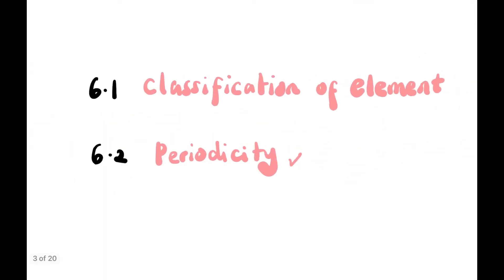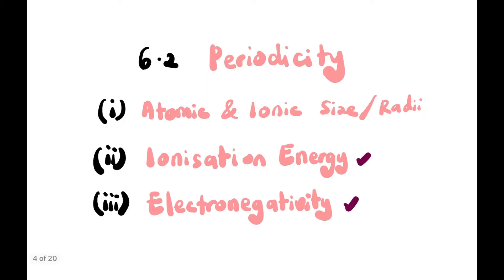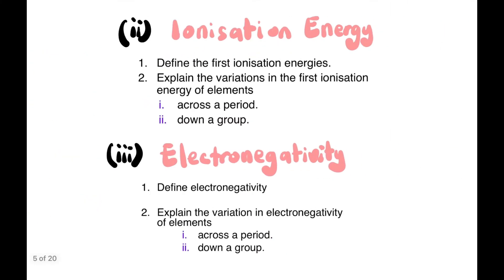Hi guys, welcome back to the channel. So chapter 6 periodic table, and today is still on 6.2 periodicity, and we're going to focus on ionization energy and electronegativity. At the end of this lesson, you should be able to define both first IE and electronegativity, and explain the variation of first IE across the period and down the group, as well as for electronegativity.